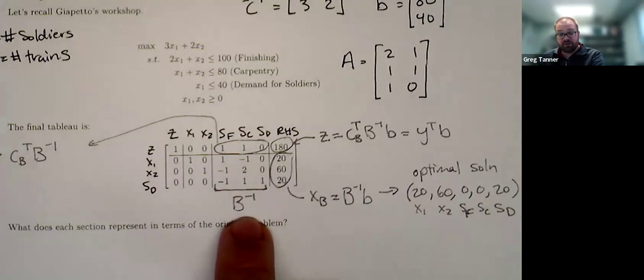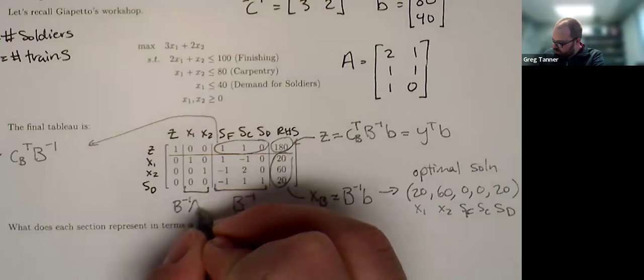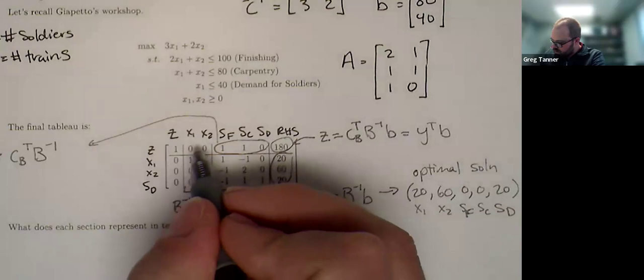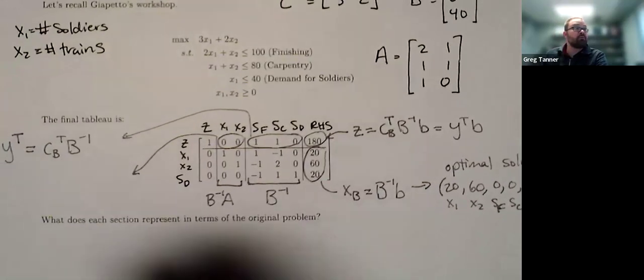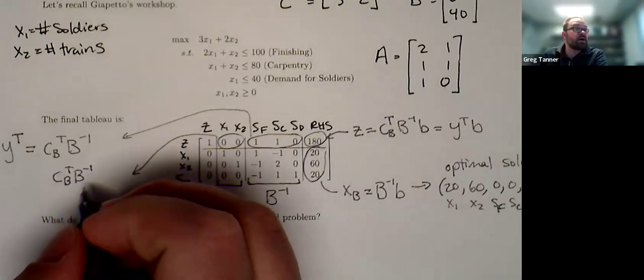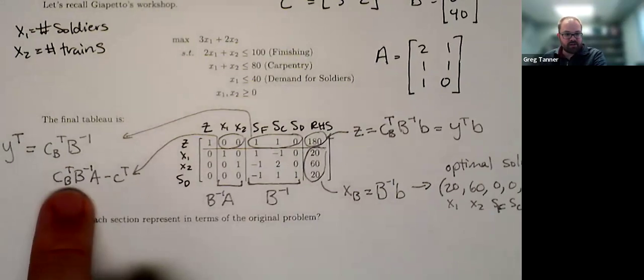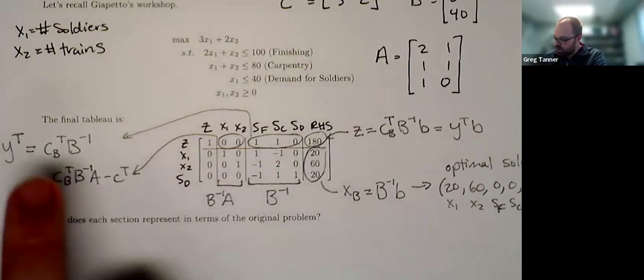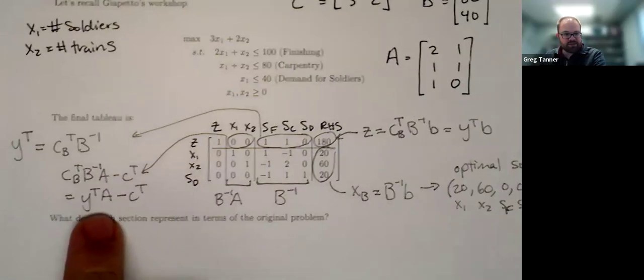And it's a beautiful thing that we don't actually have to manually invert the matrix, but if we have a tableau, we could actually read off the current value of B inverse. This here is B inverse times our original A matrix. And then this part right here, there's a couple of ways we can think about this. Think about it as CB transpose B inverse times A minus C transpose. Then we can use the fact that CB transpose B inverse is Y. And so this ends up being equal to Y transpose A minus C transpose. And we call this the reduced cost.